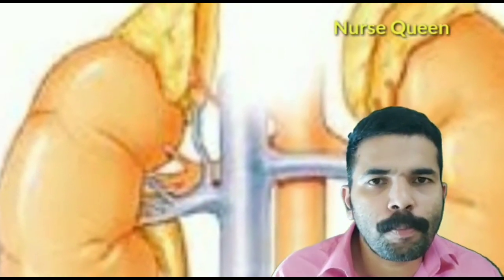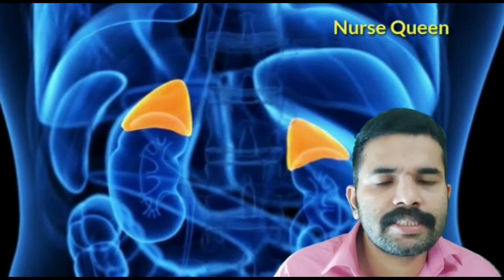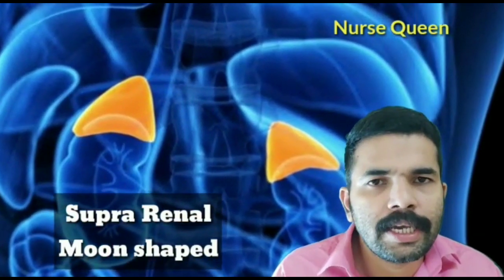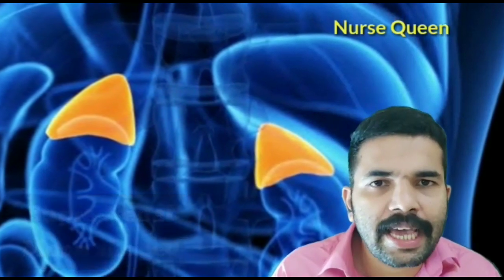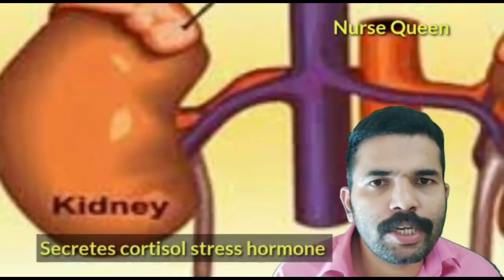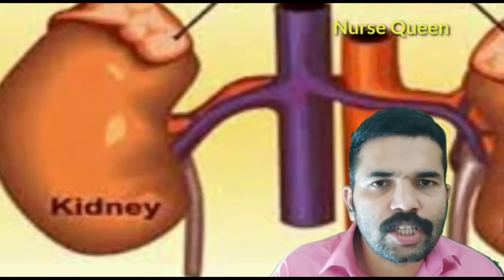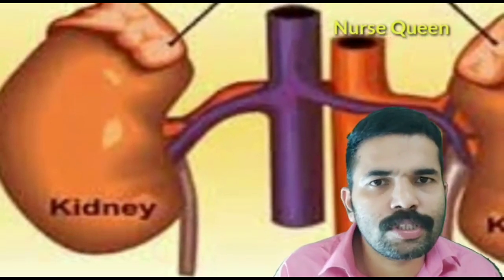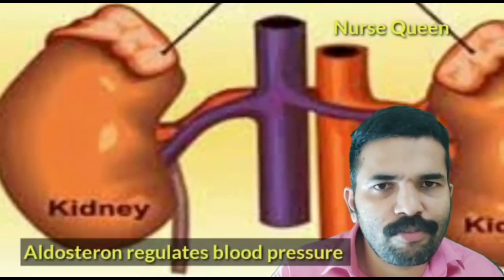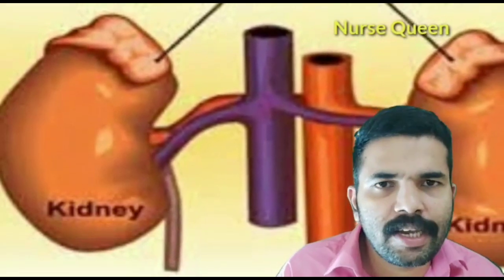The adrenal gland is situated on top of the kidneys — there are two adrenal glands, one per kidney. The other name for the adrenal gland is the suprarenal gland. It is a moon-shaped gland. The adrenal gland secretes cortisol, which is a stress hormone that helps the body respond to stress, and aldosterone, which regulates blood pressure by increasing sodium and water reabsorption.